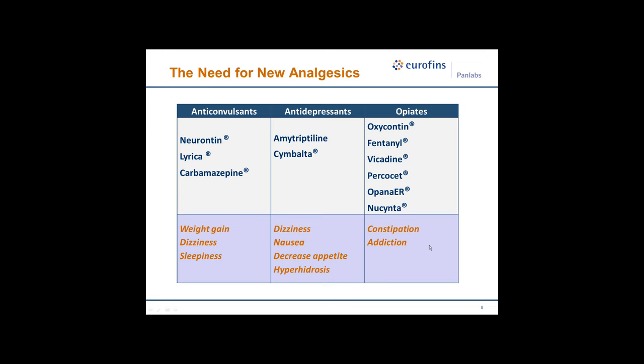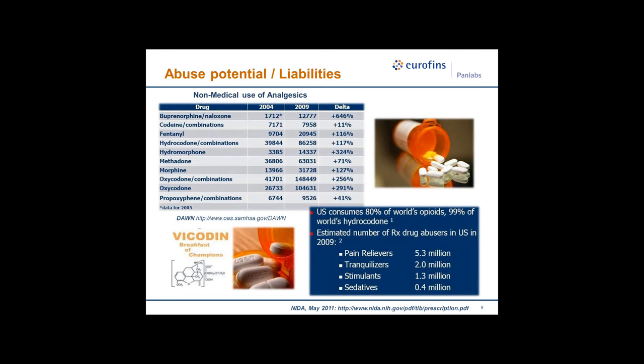Abuse potential and liabilities are on the rise. Data from DAWN shows a five-year leap in non-medical use of analgesics — oxycodone combinations alone increased over this period by 256%. The U.S. consumes 80% of the world's opiates and 99% of the world's hydrocodone. It's estimated there are 5.3 million drug abusers in the United States for pain medications alone.